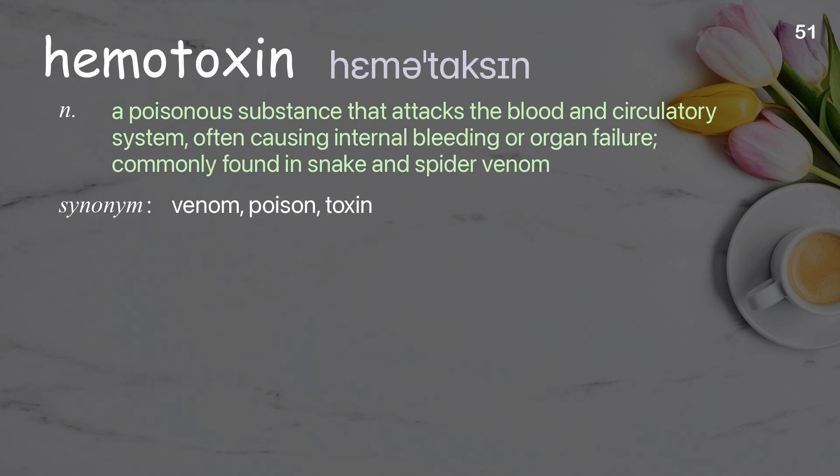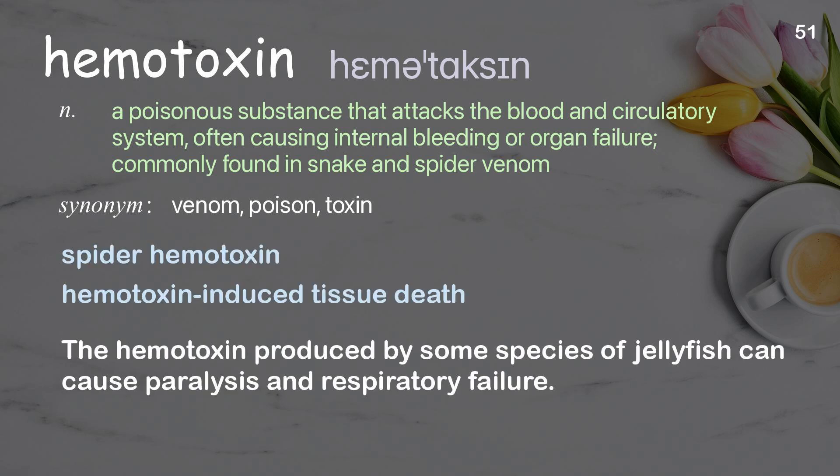Hematoxin: a poisonous substance that attacks the blood and circulatory system, often causing internal bleeding or organ failure, commonly found in snake and spider venom. Examples: spider hematoxin. The hematoxin produced by some species of jellyfish can cause paralysis and respiratory failure.